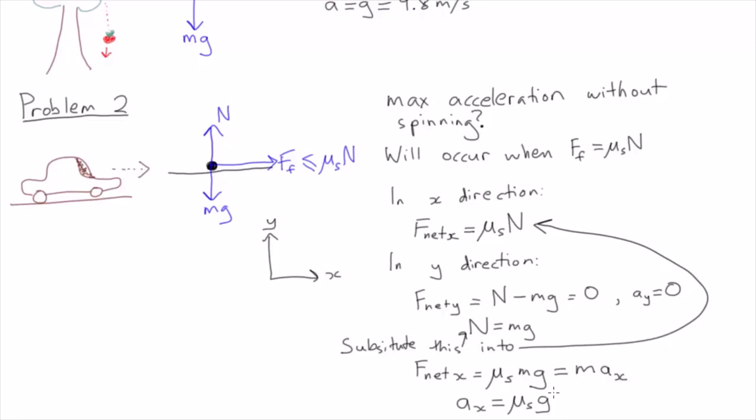The easiest check to do is making sure that the dimensions on both sides of your final equation match. Here we have acceleration, which has units of metres per second squared, equals μs, the coefficient of friction, which has no dimensions, and g, which also has units of metres per second squared.